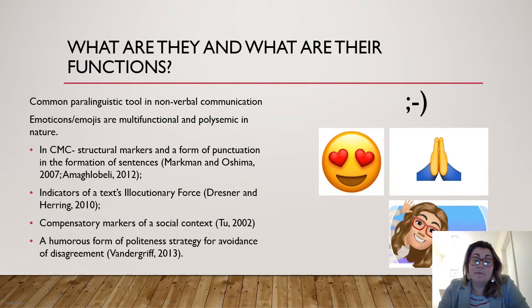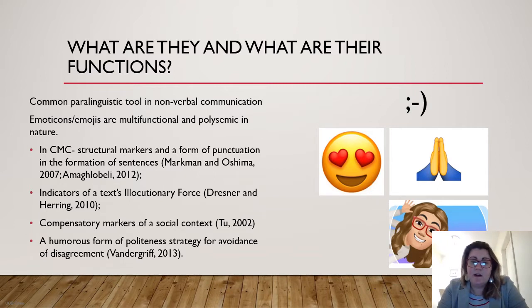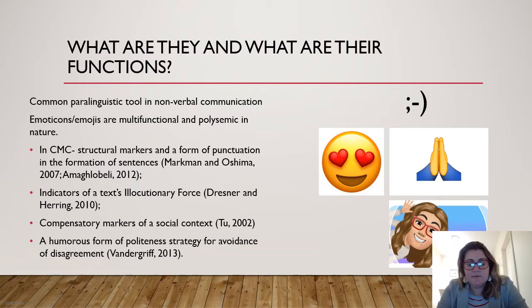Let's look at the pictures on the screen. On the top layer we have an emoticon, which is a set of punctuation marks — Scott Foreman created the first smiley emoticon back in 1982 at Carnegie Mellon University. This was later followed by the emoji, which are pictograms in the middle layer, and then at the bottom is a memoji, a graphical depiction of somebody's identity online. Emojis are common paralinguistic tools in non-verbal communication; they're multifunctional and polysemic in nature, meaning they have multiple meanings.